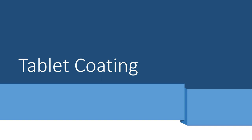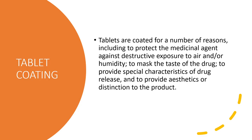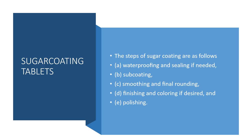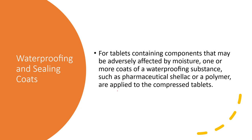Next is the process of tablet coating. Tablets are coated for a number of reasons discussed earlier. You have two types: sugar coating and film coating. For sugar coating tablets, the steps are waterproofing and sealing, subcoating, smoothing, finishing, and polishing. For waterproofing and sealing, tablets containing components adversely affected by moisture must be waterproofed first using shellac or any polymer applied to the compressed tablets.